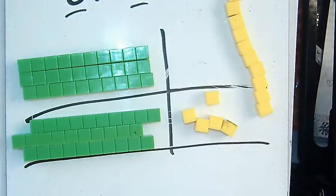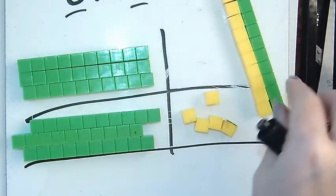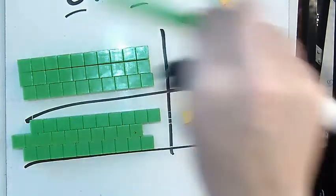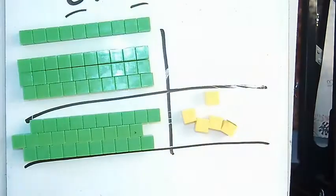This is called bundling. We're going to take these 10 ones and exchange them or turn them into a ten stick. I'm going to put a ten stick here and take these away because it's the same—it's equal to a ten.